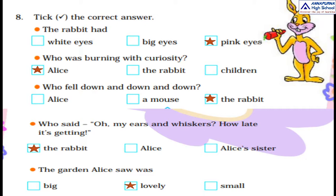Next: who said 'Oh my ears and whiskers, how late it's getting' — the rabbit, Alice, or Alice's sister? The correct answer is the rabbit. Also, how was the garden — big, lovely, or small? The correct answer is lovely. The garden Alice saw was lovely.